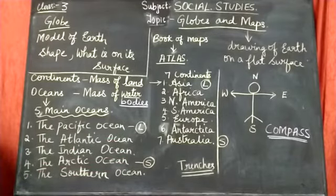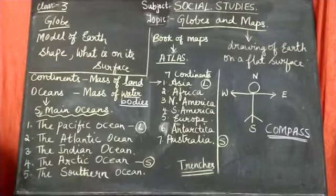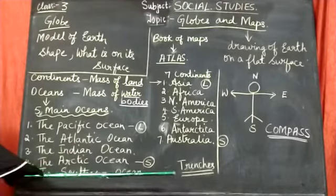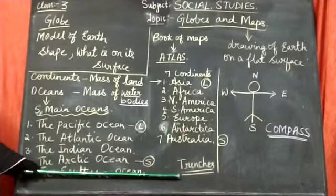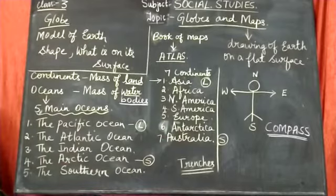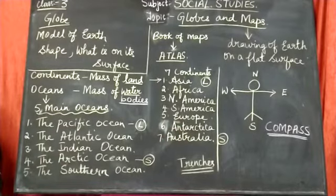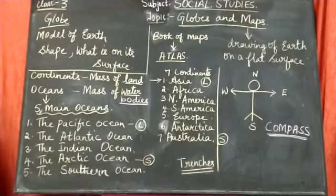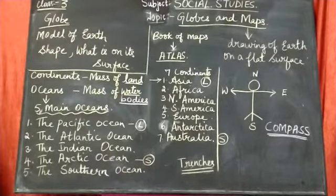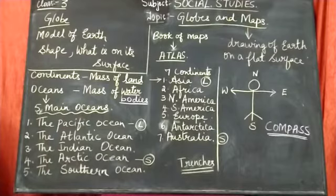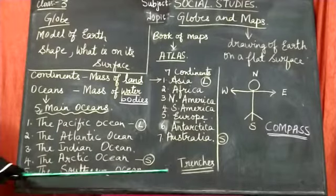Now next is we will come to know about a word called trenches. Now what are trenches? Under the oceans we are having small or huge mountains also and we are having deep hollows as well. Now these deep hollows under the ocean are known as trenches. Did you all follow?